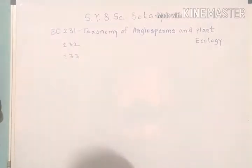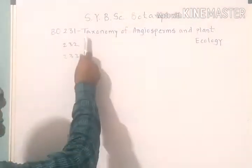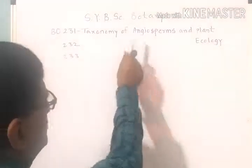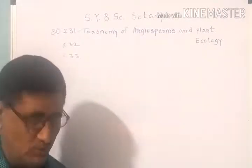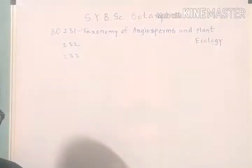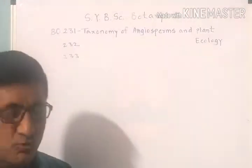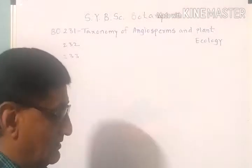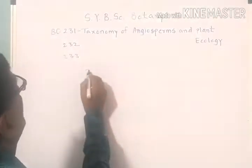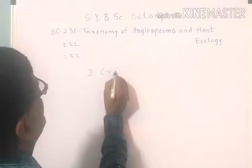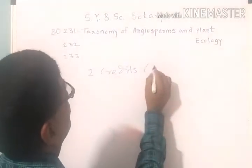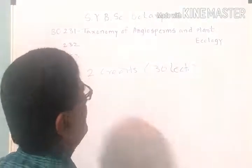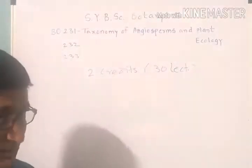So for this semester, I am going to teach you paper first. The title of the paper is Taxonomy of Angiosperm and Plant Ecology. For this paper, you have been allotted two credits — a total of two credits covering 30 lectures. This means one credit is equivalent to 15 lectures.